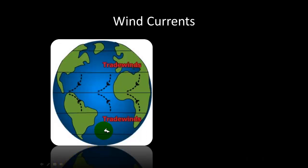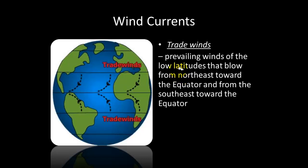Now let's look at the different types of wind currents. The trade winds are found in the tropics — they take place mostly in the low latitudes. They blow from the northeast towards the equator and from the southeast towards the equator, so the trade winds converge toward the equator in the low latitudes.